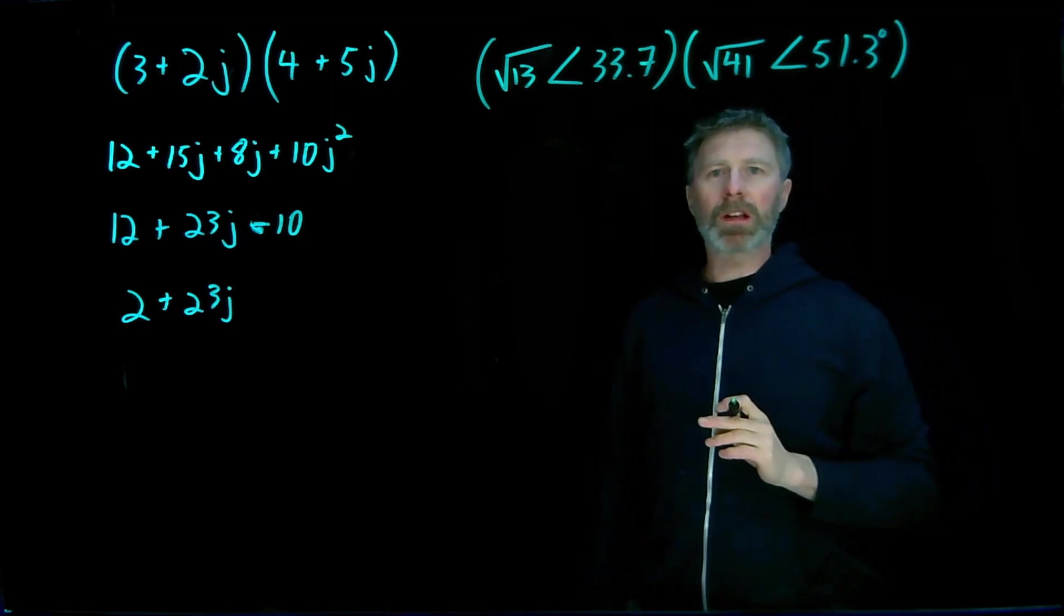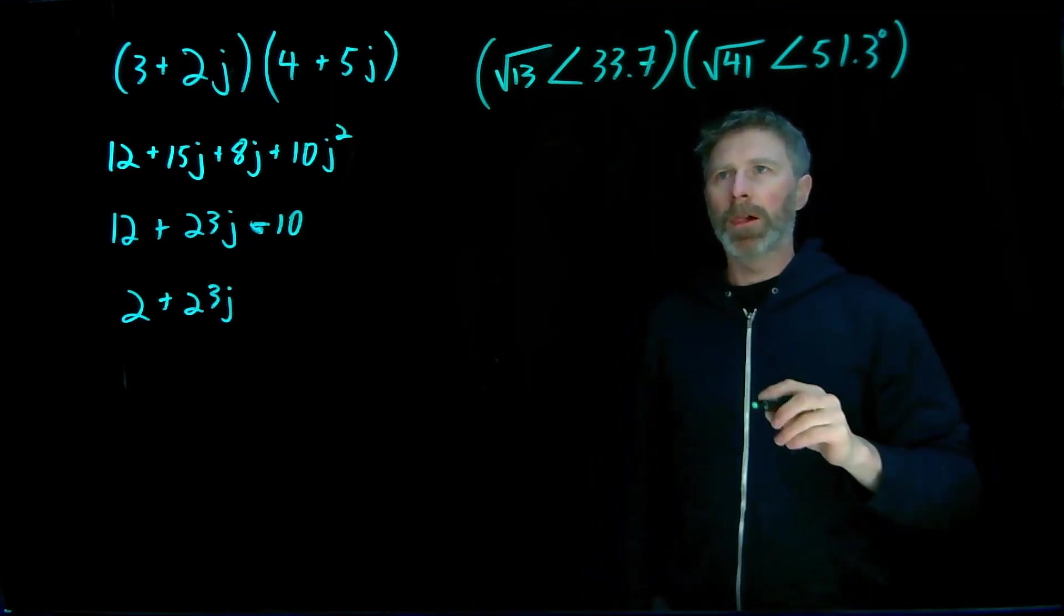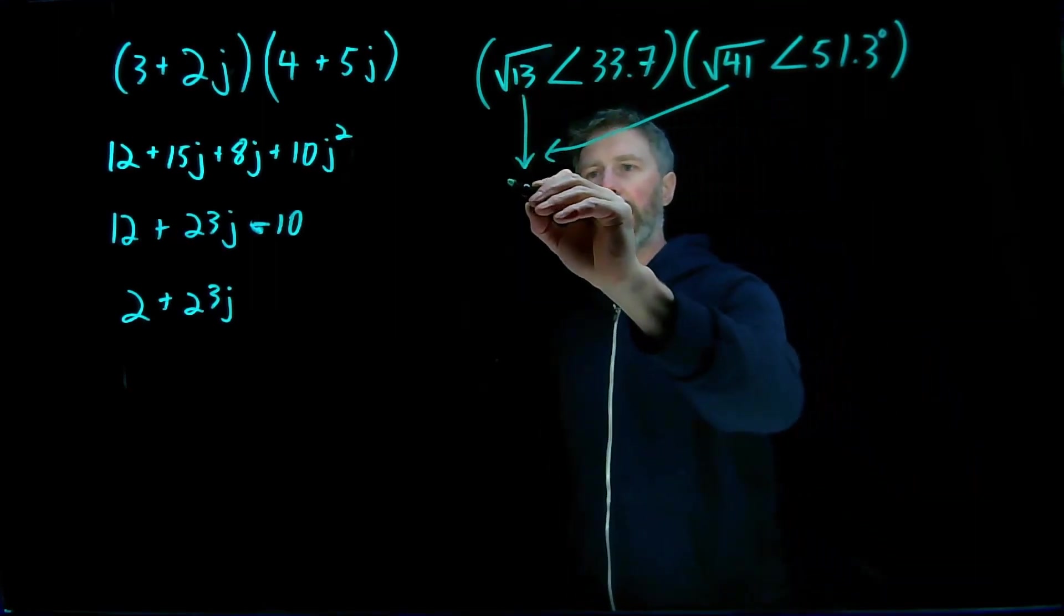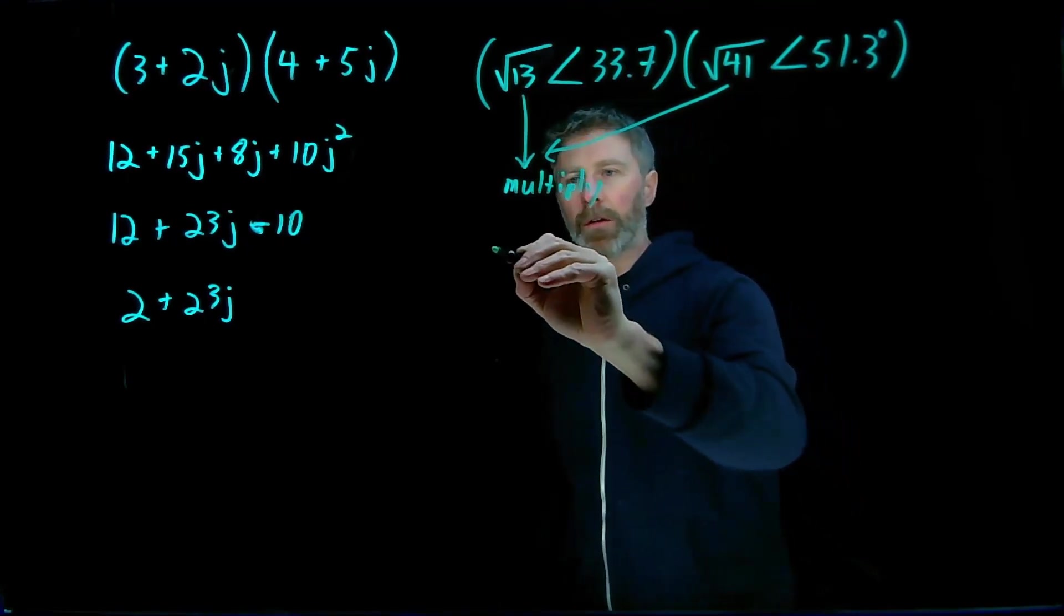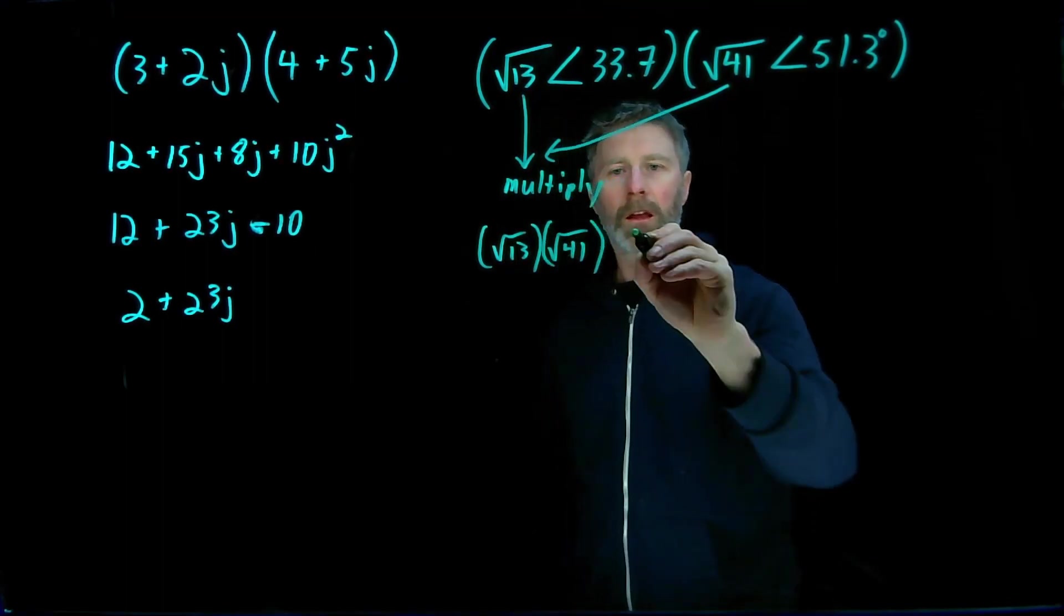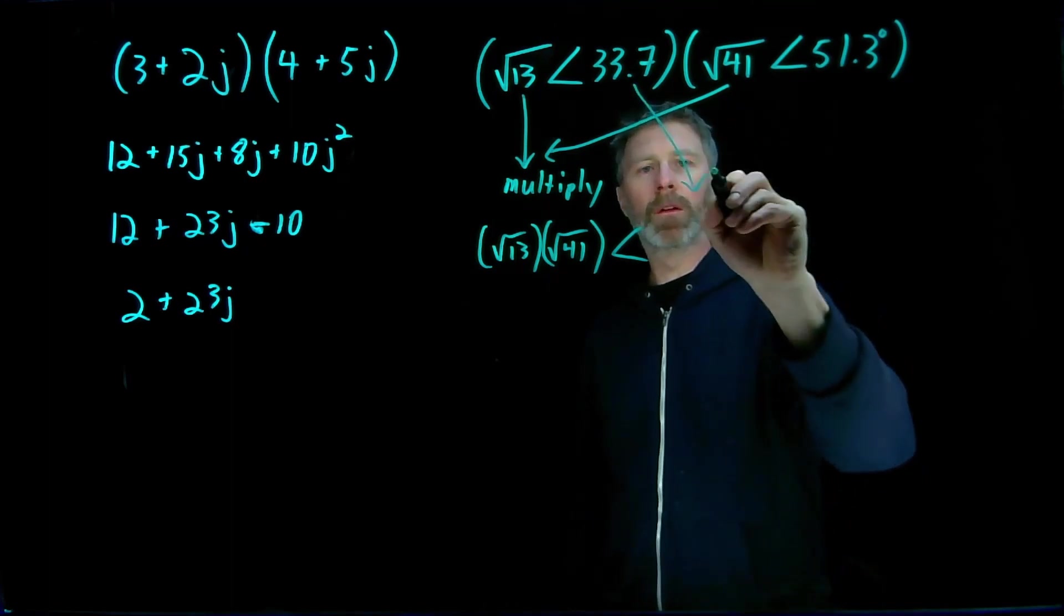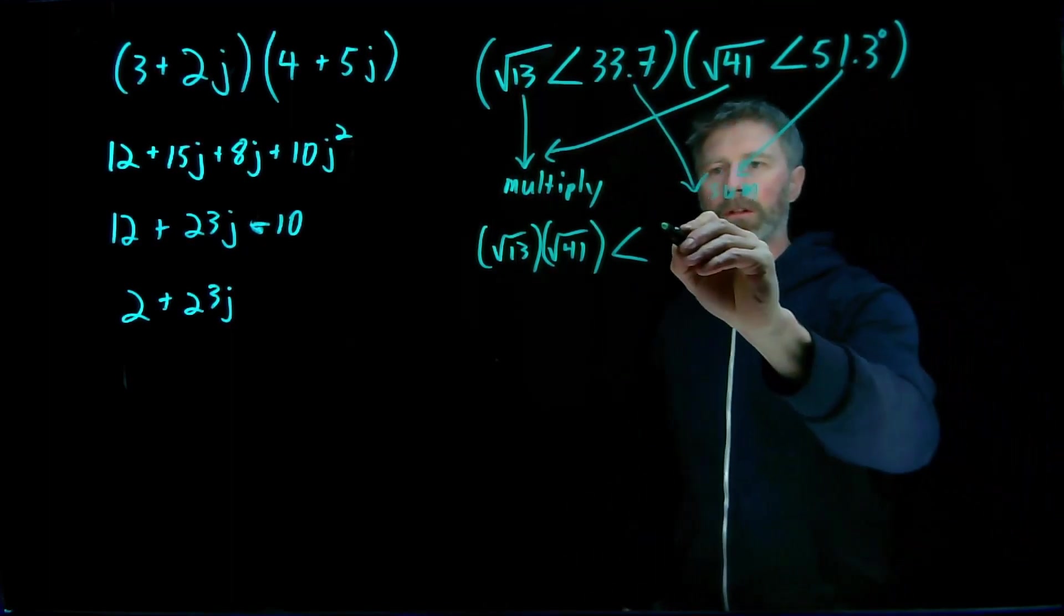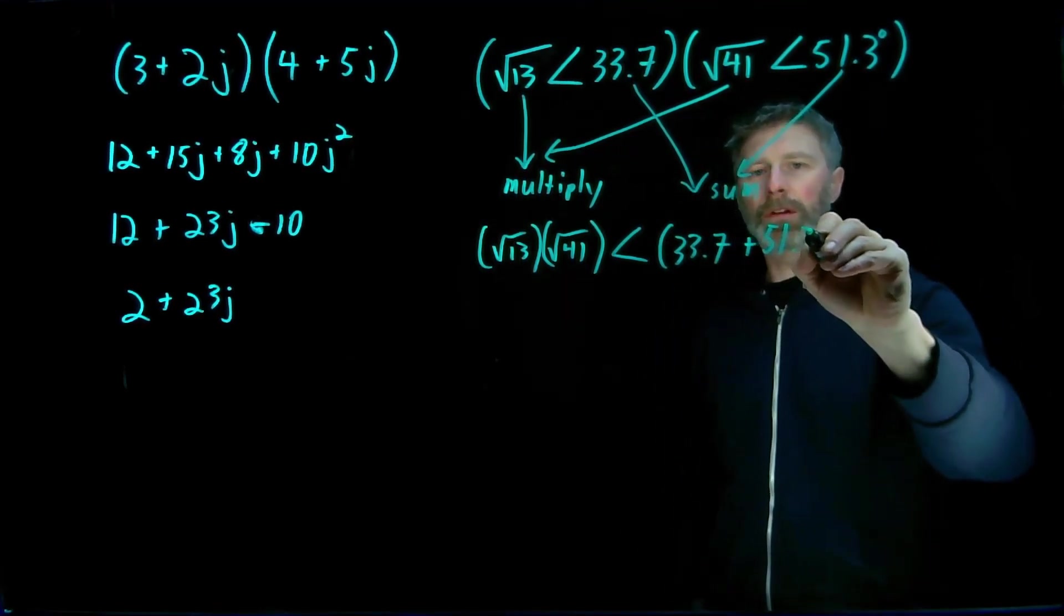So when you have your numbers in polar coordinates, it's very simple to do multiplication. What I do is I take the magnitude part and I multiply those two together. So I'll get root 13 times root of 41. And then I take the angle. The angle is determined by the sum of the two angles. So the angle will be 33.7 plus 51.3.